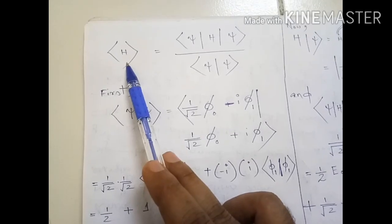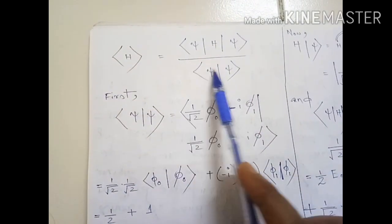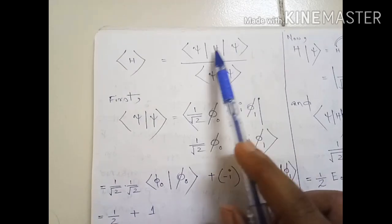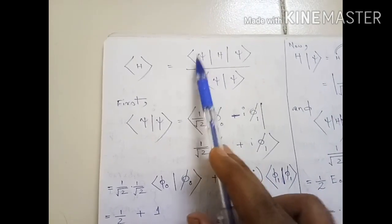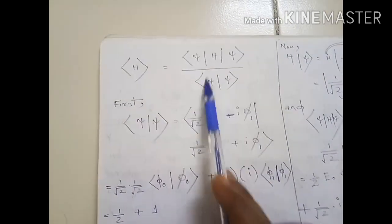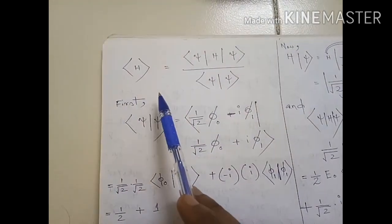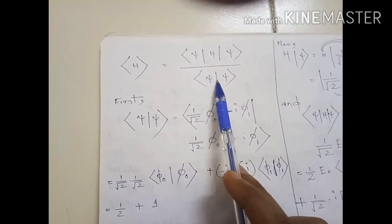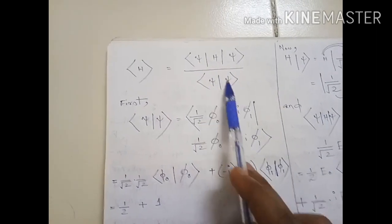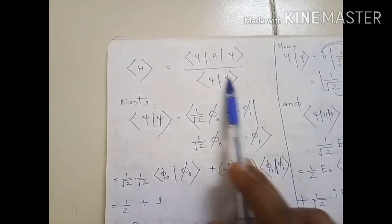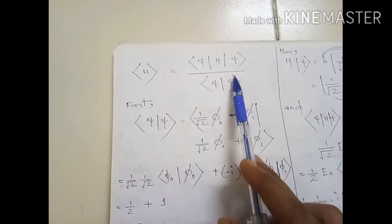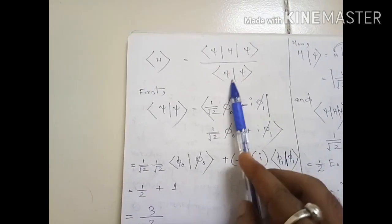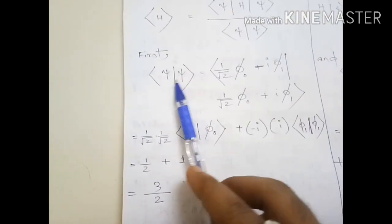The question asks us to find the expectation value of the Hamiltonian. The formula is ⟨H⟩ = ⟨ψ|H|ψ⟩ divided by ⟨ψ|ψ⟩. We are dividing by ⟨ψ|ψ⟩ because it is not mentioned that ψ is a normalized wave function, so we must divide by its inner product. For convenience, let us first find the inner product ⟨ψ|ψ⟩.